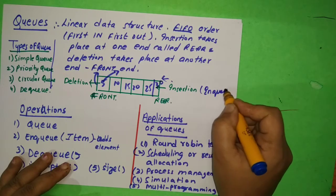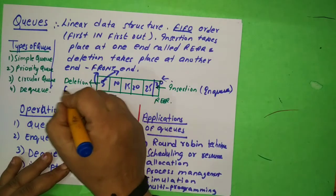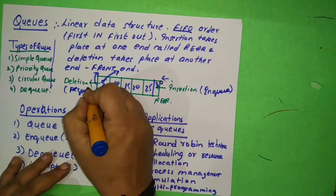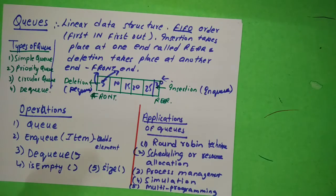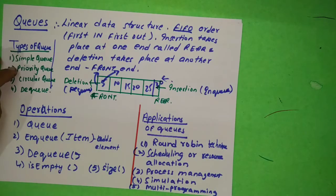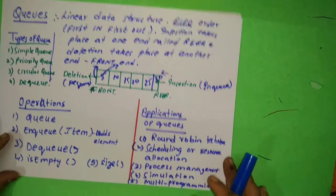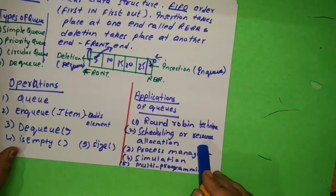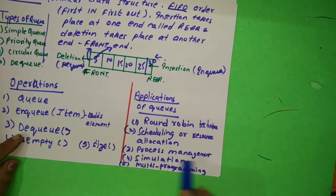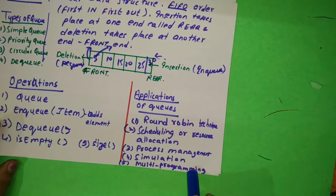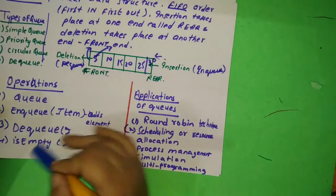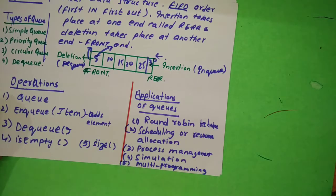What are the types of queue? We have simple queue, priority queue, circular queue, and dequeue. And what are the applications of queue? Round-robin techniques scheduling or resource allocation, process management, simulation, and multi-programming. So this is also important. Please go through this correctly.